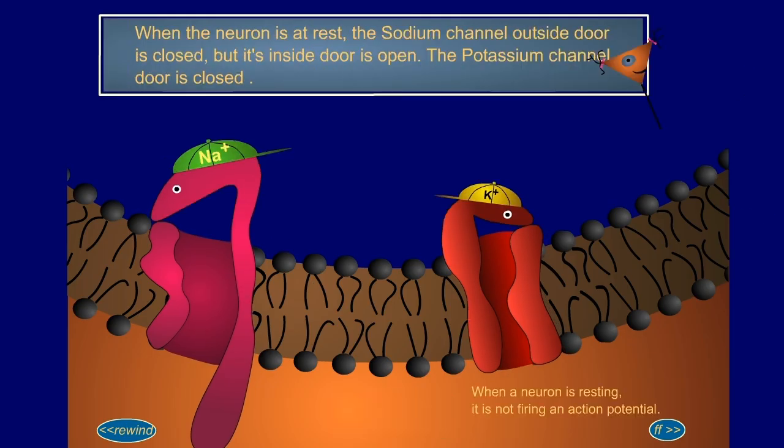When the neuron is at rest, the sodium channel outside door is closed, but its inside door is open. The potassium channel door is closed.